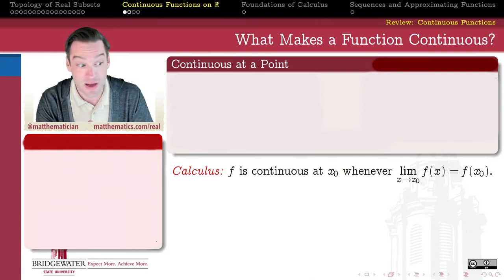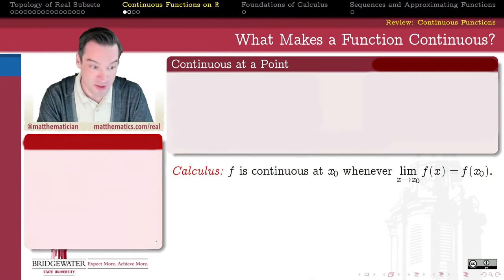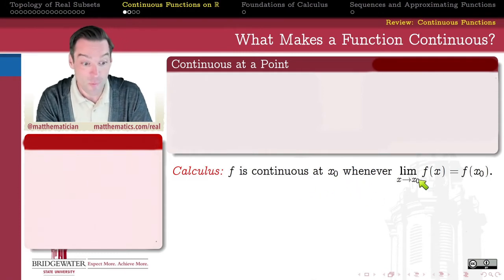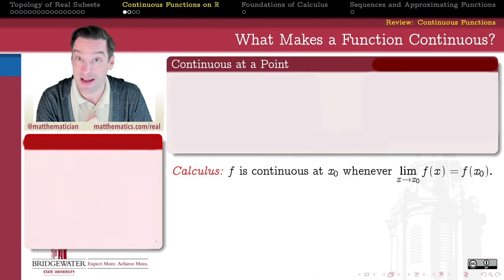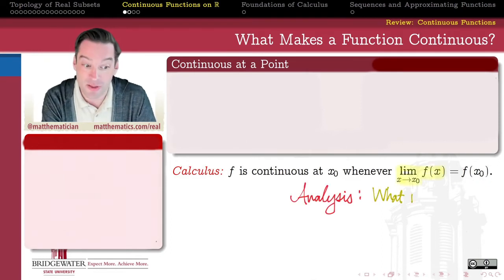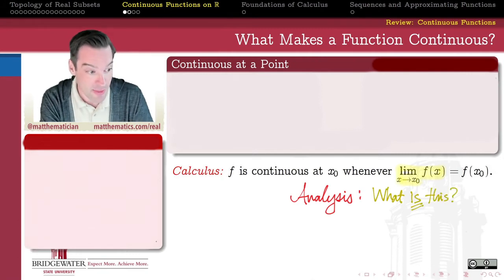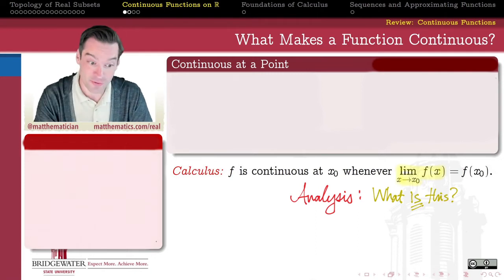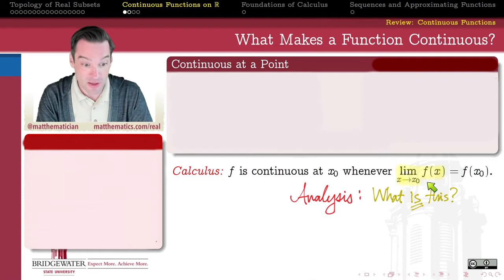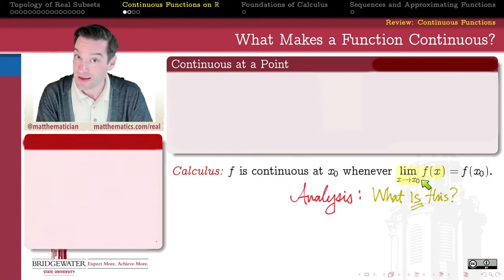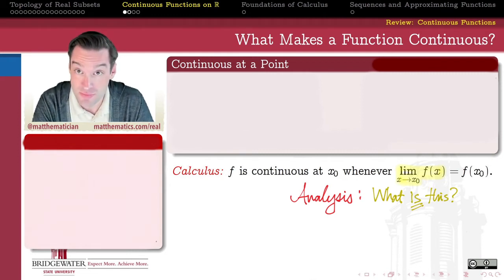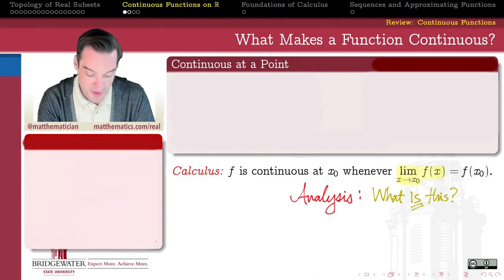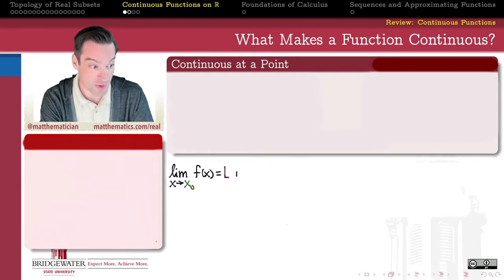The definition for continuity in our calculus textbooks tends to look something like this: f is continuous at a point x₀ whenever the limit of f(x) as x approaches x₀ agrees with the value of f at x₀. But we want to set the bar a little higher for ourselves. We've been through calculus and it is now time to think in an analysis framework — what does this actually mean? In particular, the thing that's unclear except from an analysis framework is what the limit of a function should actually mean from a real analysis perspective. So we need some understanding of what the limit of f(x) as x approaches x₀ really is.